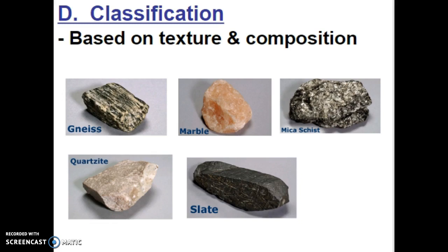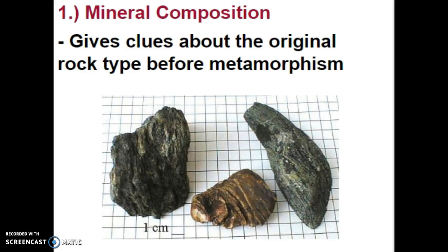Quartzite is when siltstone undergoes heat, pressure, or chemical activity. All of these rocks, at one point in their existence, were another type of rock before metamorphism happened. The minerals inside metamorphic rocks also give us a clue about the original rock type before the heat, pressure, or chemical activity acted upon those rocks.